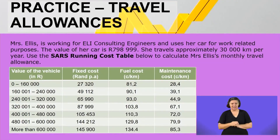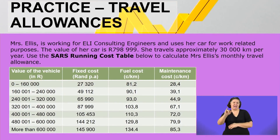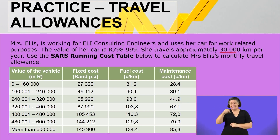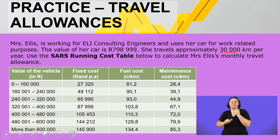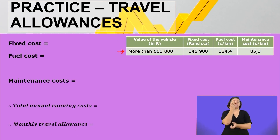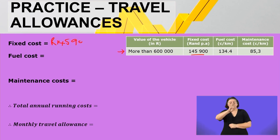Let's move on now to travel allowance. Mrs. Ellis is working for LA Consulting Engineers and uses her car for work-related purposes. The value of her car is 798,999 rand, and she travels approximately 50,000 kilometers per year. Using the SARS running cost table, the fixed cost per annum will be 145,900 rand.